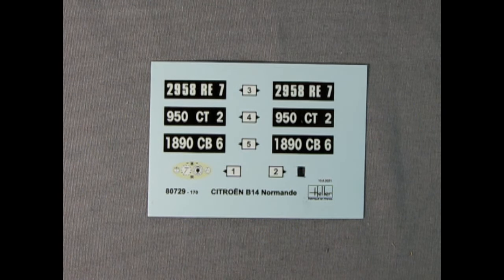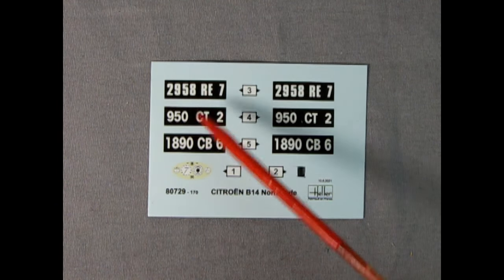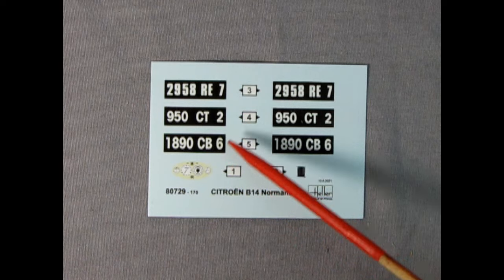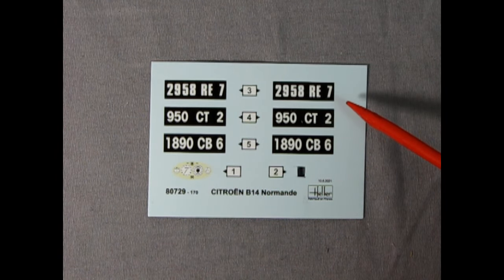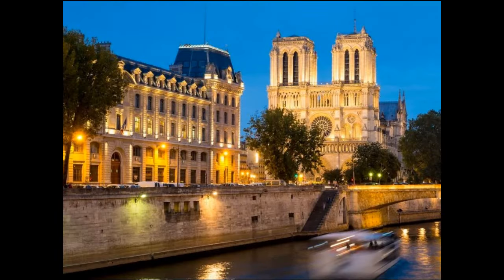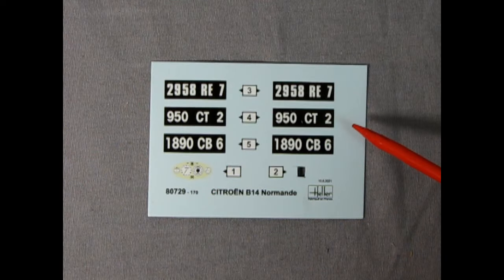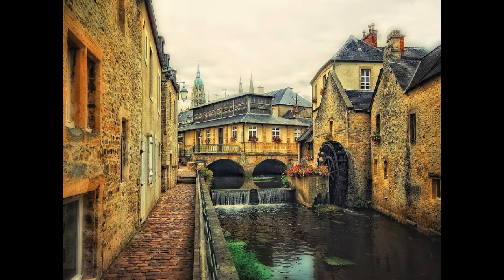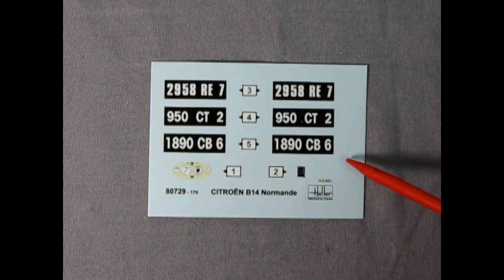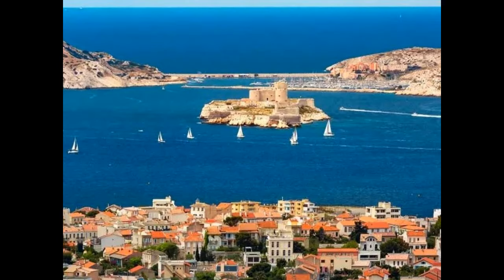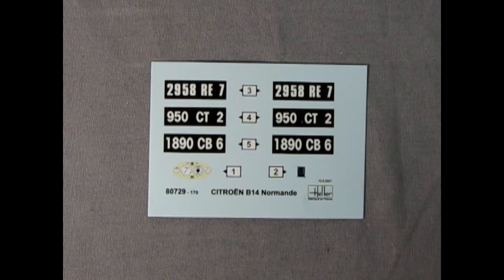The license plates included in this kit follow the new for 1928 French registration system. This system used one to four letters in the front followed by a two-letter code and could include a further number at the end after the two-letter code. Deciphering the code our first plate is from Saône, the second plate from Calvados and the third from Bouches-du-Rhône. Which plate would you use?